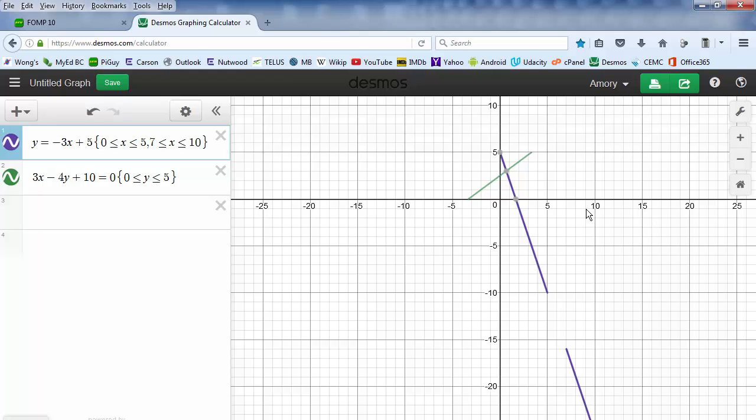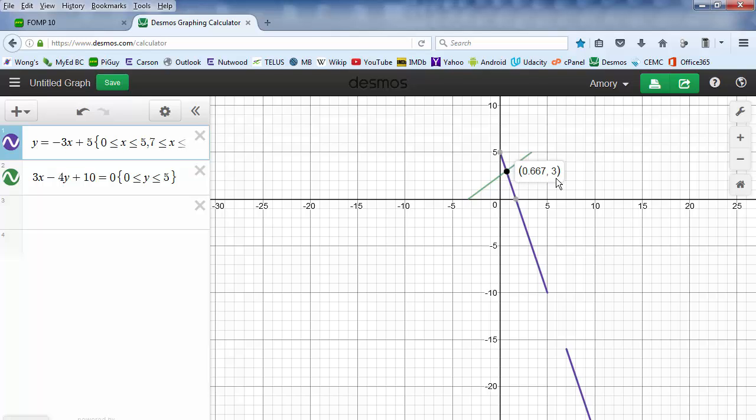Now, one thing Desmos does nicely is it figures out intersections. That's where the lines meet. So this is 2 thirds and 3. It gives you decimal values, but you can guess the fraction if you like.